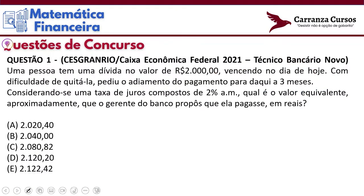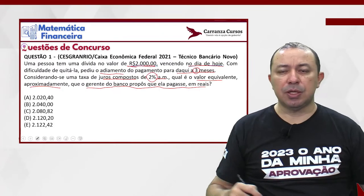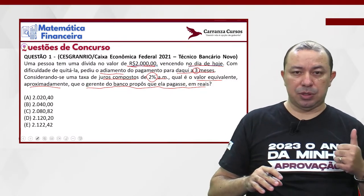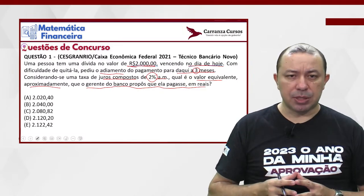Questão 1 — Cebraspe/Rio, Caixa Econômica Federal 2021, Técnico Bancário Novo. Uma pessoa tem uma dívida no valor de R$2.000 vencendo no dia de hoje. Com dificuldade de quitá-la, pediu o adiamento do pagamento para daqui a três meses. Considerando uma taxa de juros compostos de 2% ao mês, qual é o valor equivalente aproximado que o gerente do banco propôs que ele pagasse? Uma questão bem simples de juros compostos: prazo de três meses e taxa de 2% ao mês. O prazo até 3 é sagrado — a banca nunca vai exigir tabela porque você tem plenas condições de fazer as multiplicações.